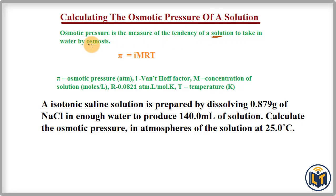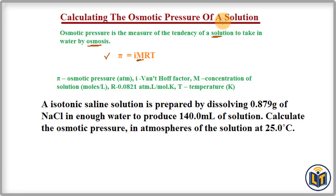Osmotic pressure is the measure of the tendency of a solution to take in water by the osmosis process. Osmotic pressure is directly proportional to the concentration — that is, the molarity — of the solution at constant temperature. The formula used to calculate osmotic pressure is: π = iMRT.